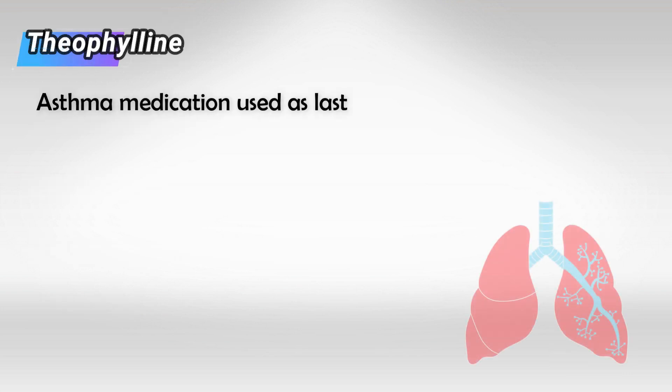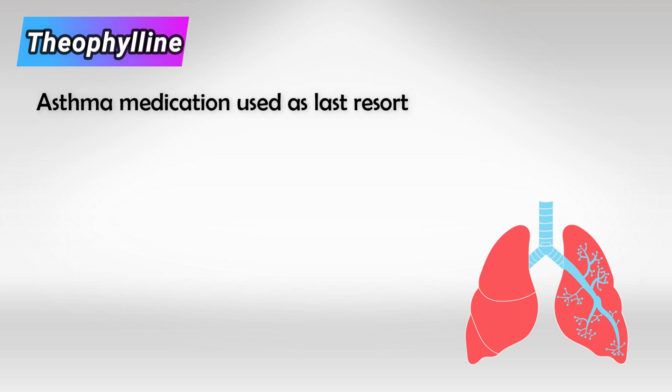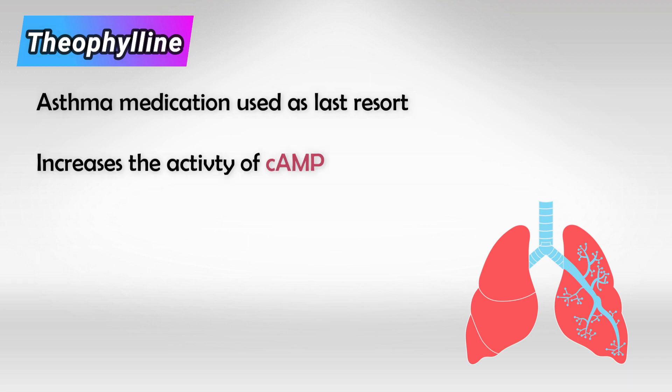Next is Theophylline. This is an asthma medication that is rarely used. It works by increasing cyclic AMP.